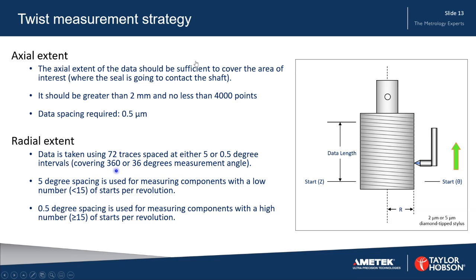The 72 traces are spaced either at 5 degree or 0.5 degree intervals, covering the full 360 degrees or 36 degrees respectively. The 5 degree spacing is used for measuring components with a low number of starts per revolution — that's less than 15. The half degree spacing is recommended for measuring components with a high number — that's greater than or equal to 15 starts per revolution. The measurement is taken using a 2 or 5 micron diamond stylus.